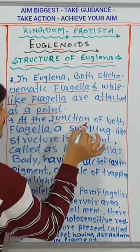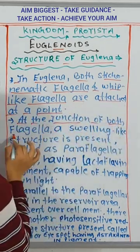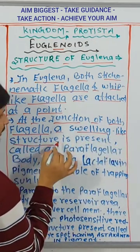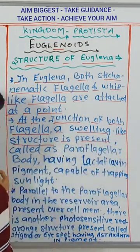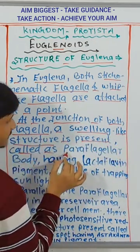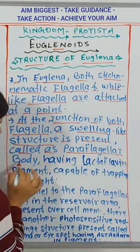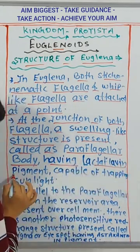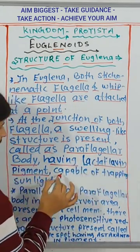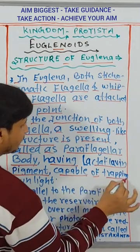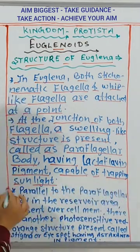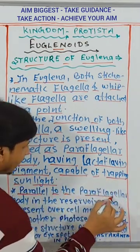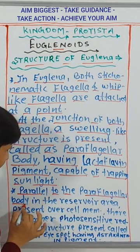At the junction of both flagella, a swelling-like structure is present called the para-flagellar body, having lactaflavin pigment capable of trapping sunlight.